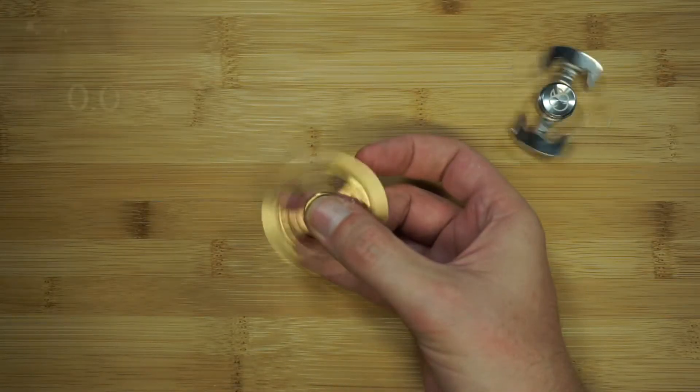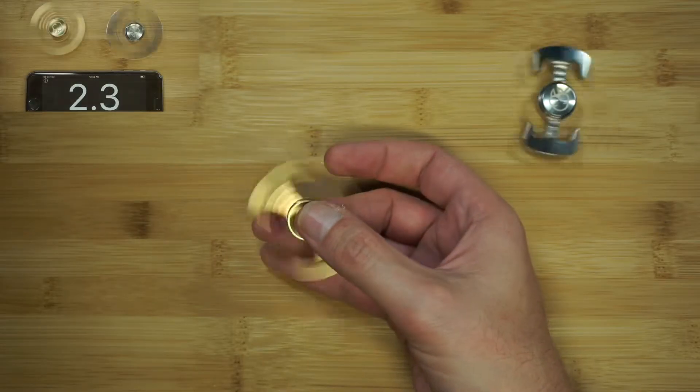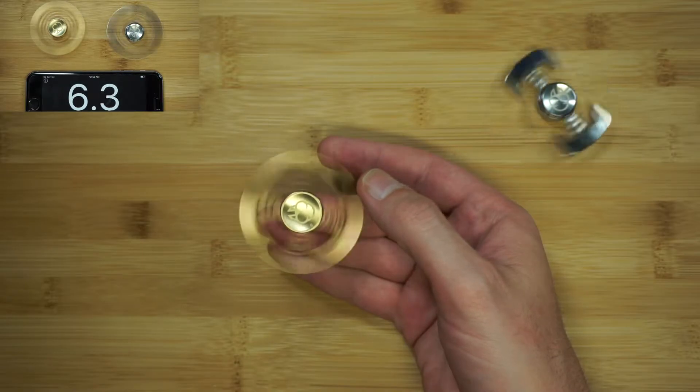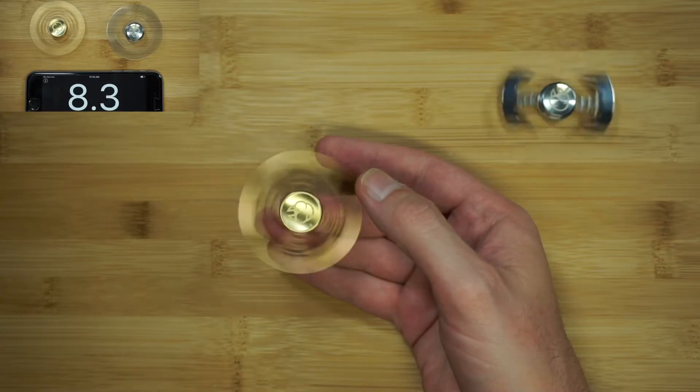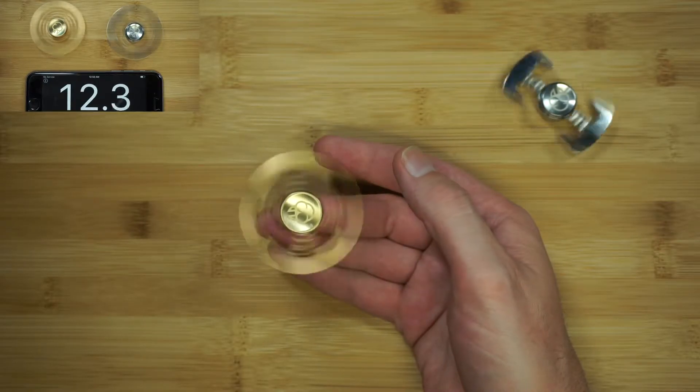There is going to be a dual spin time up in the corner where I timed both of these together and in case you don't want to sit through that, I do have to say the Stainless Steel got 2 minutes and 33 seconds and the Brass here ended up getting 4 minutes and 23 seconds.